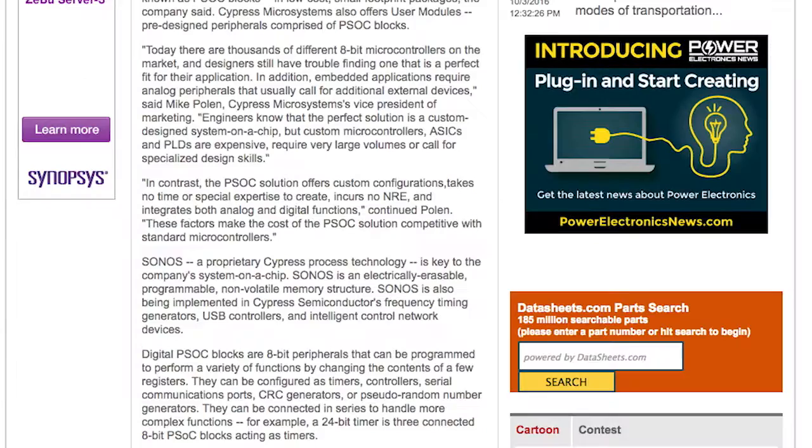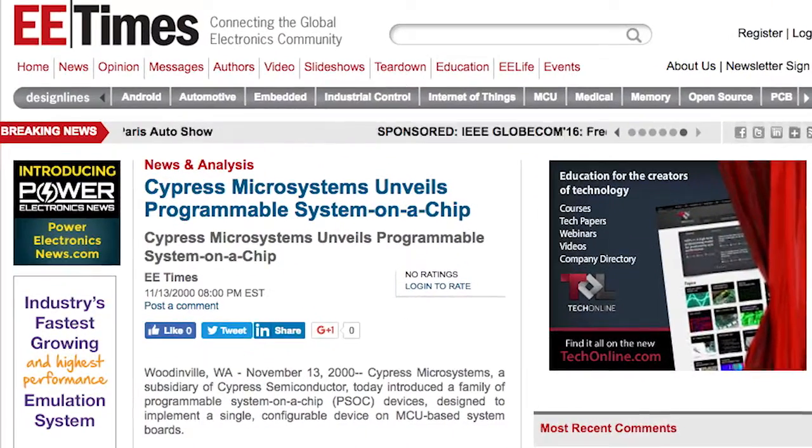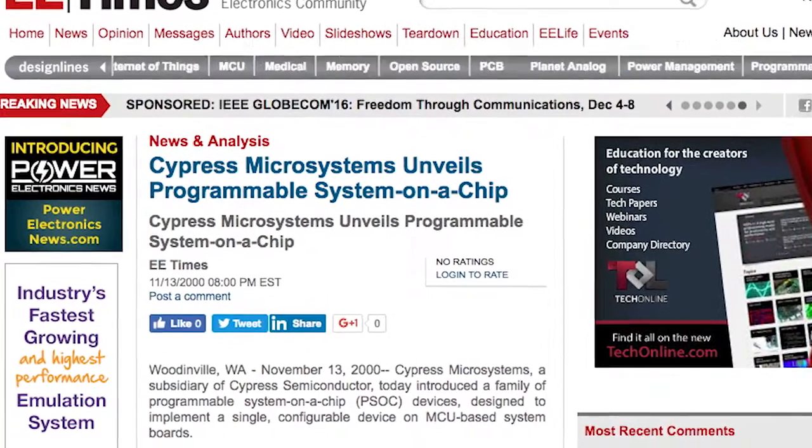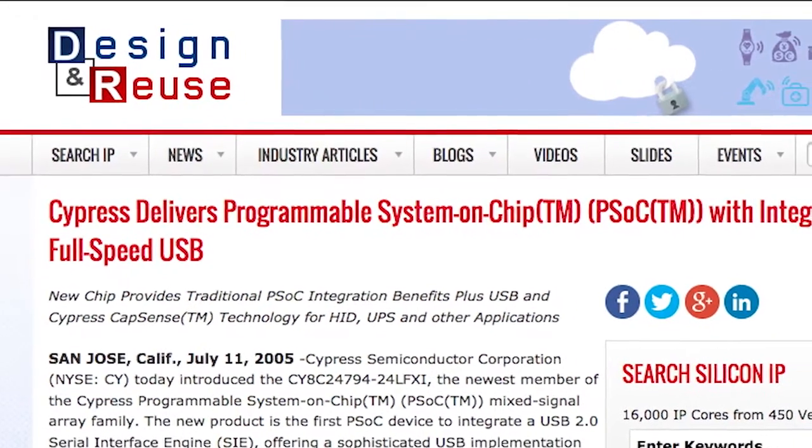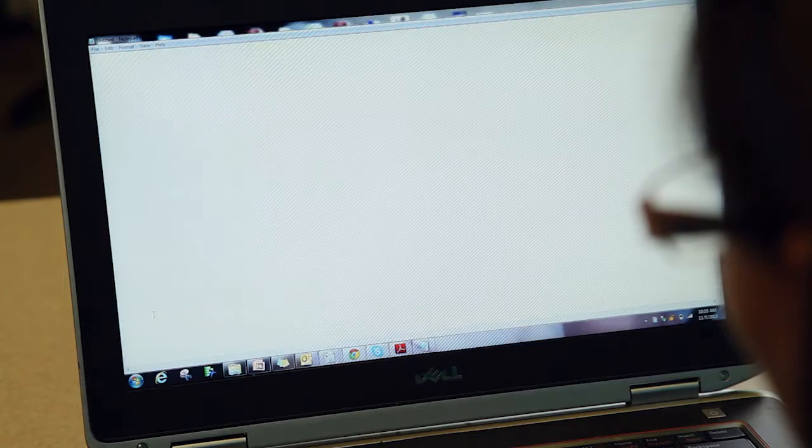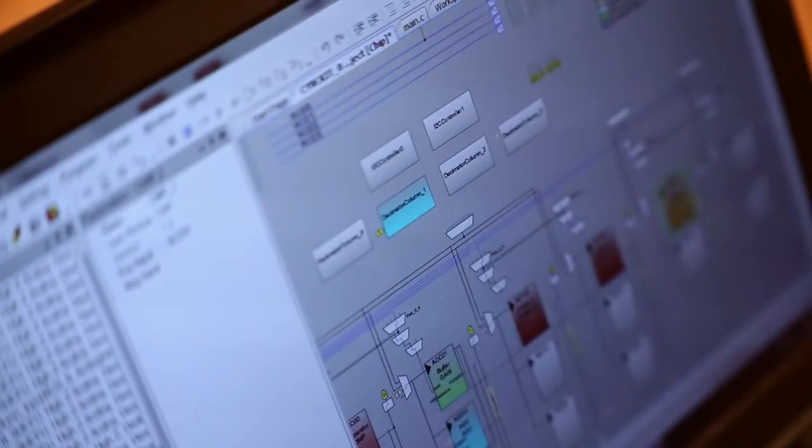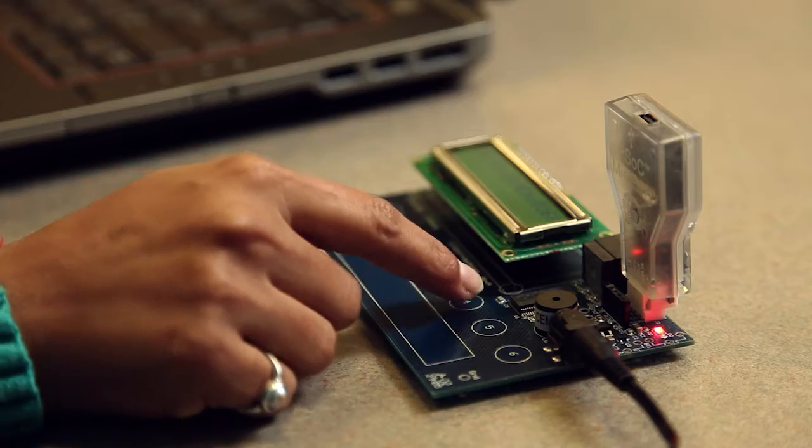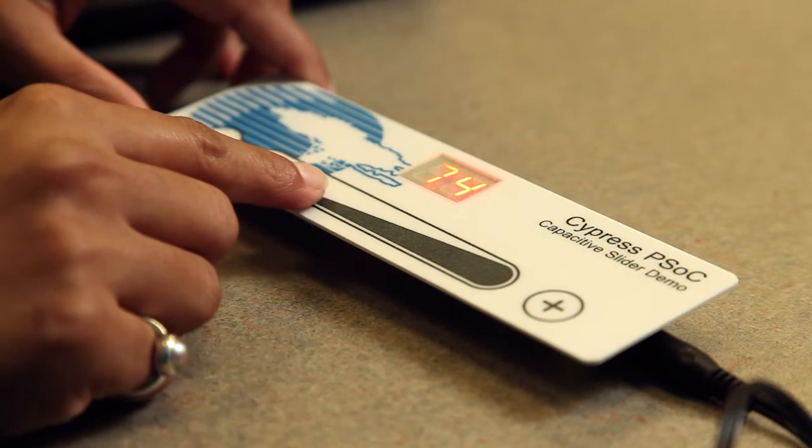Cypress realized that they had a microcontroller line for USBs, and they wanted to expand that into the general purpose microcontroller market. But they realized that the competition had hundreds, and in some cases thousands, of devices. So instead, they figured out that if we made a programmable chip, we could come out with one device or a small number of devices that could be programmed into those hundreds of devices.